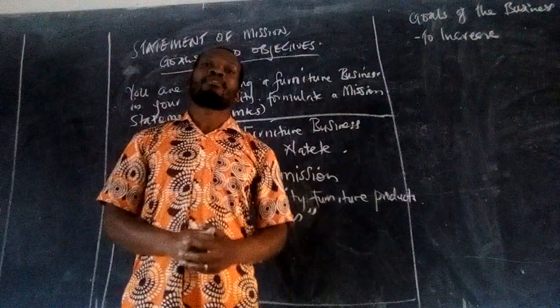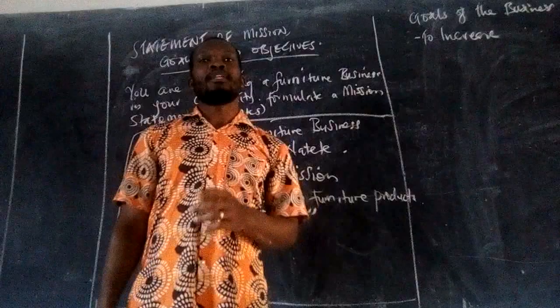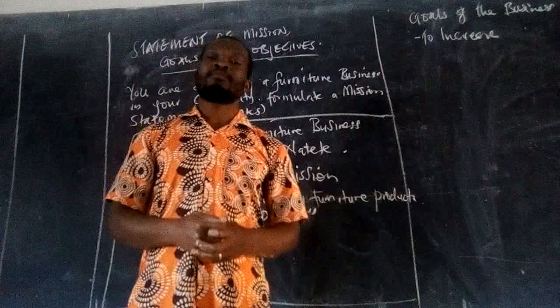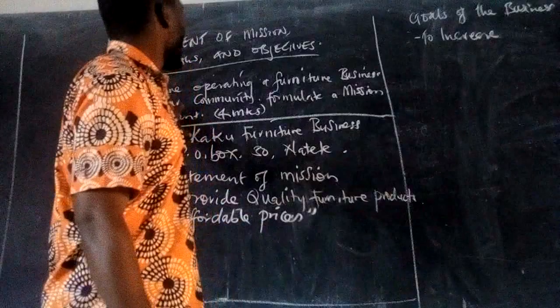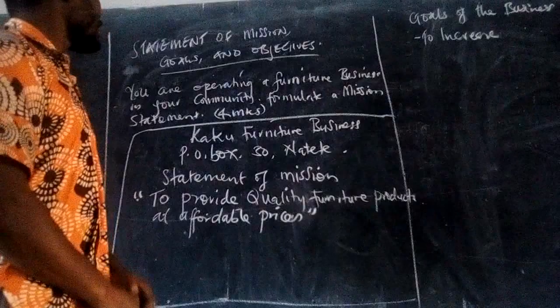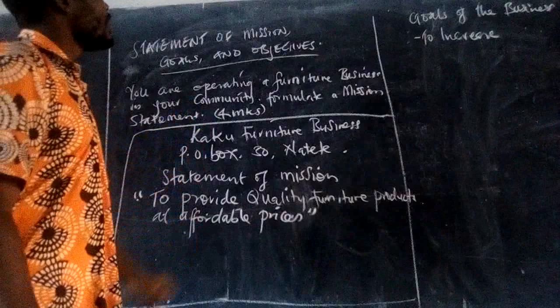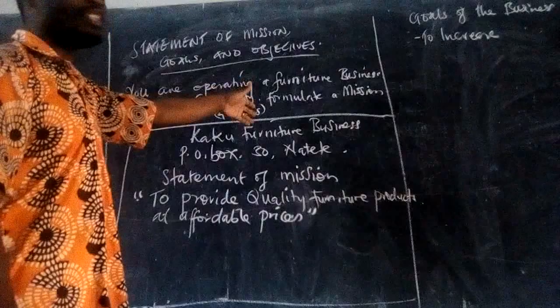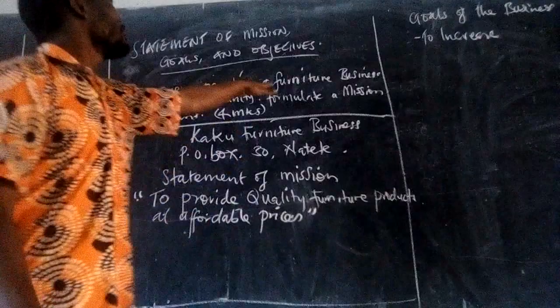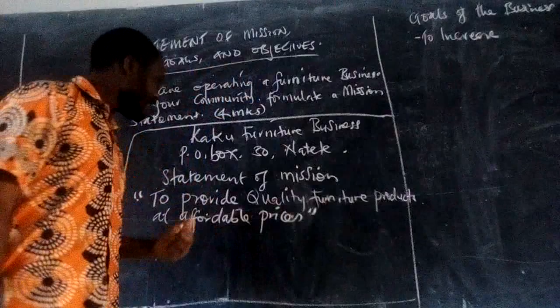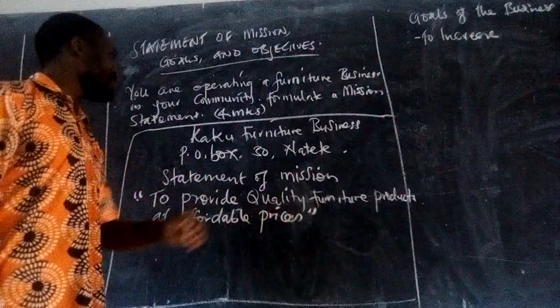Today we want to continue with learning about the Statement of Mission, Goals and Objectives. In the previous session we were disrupted with just something small but we shall continue. We have seen how to prepare what we call the Statement of Mission, and we have said that a Statement of Mission is not from the nature of the business. We were given a question where you are operating a furniture business, so the nature of the business is dealing with furniture. We created a mission statement: to provide quality furniture products at affordable prices.